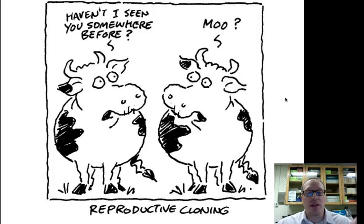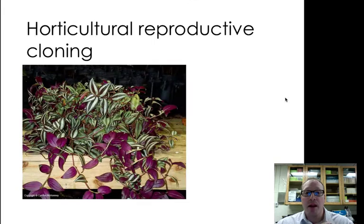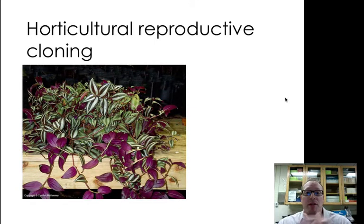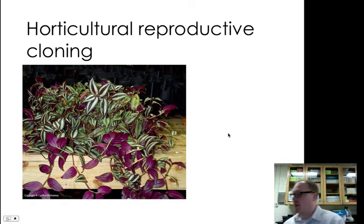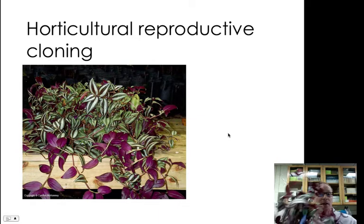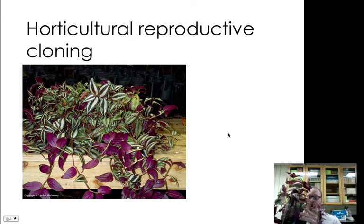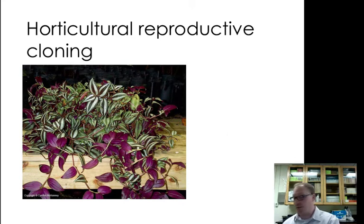I'm going to break this down into three separate ways that reproductive cloning can happen. The first is horticultural reproductive cloning — horticulture is the art and science of growing plants. As you see pictured here, this is something called zebrinia, and I actually have some right here in this big glass jar. I'm going to show you how I can clone zebrinia, and it's actually a fairly simple process.